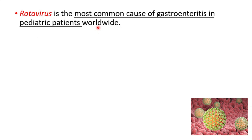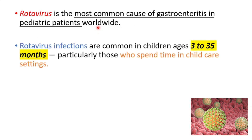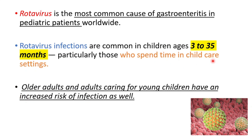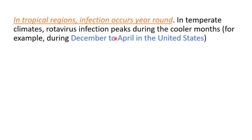Gastroenteritis can be caused by virus, bacteria, or parasites. These types of infections are common in children ages 3 to 35 months, particularly those who spend time in child care settings. Older adults and adults caring for young children also have an increased risk of infection. In tropical regions, infection occurs year-round.